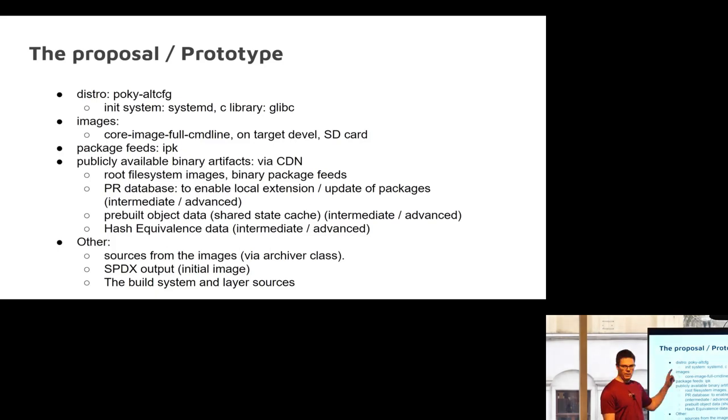Public available binary artifacts will be via the CDN as mentioned previously. So that would be the root file system image, the binary package feeds, the PR database. This is the biggest technical chunk that still needs to be done and figured out. The PR database will maybe trick Joshua into helping us make it work like hash equivalency. You technically need a hierarchy of PR servers, but it needs to know about the hash equivalence data in order to work. You can't have one without the other. So there's some similar problems that we need to solve that don't exist right now. As we wrote it, the PR database can be dumped and you can load it and match it up to the hash equivalency data. We're going to make the sources available from the images and the SPDX output as well as the build system and other layer sources.